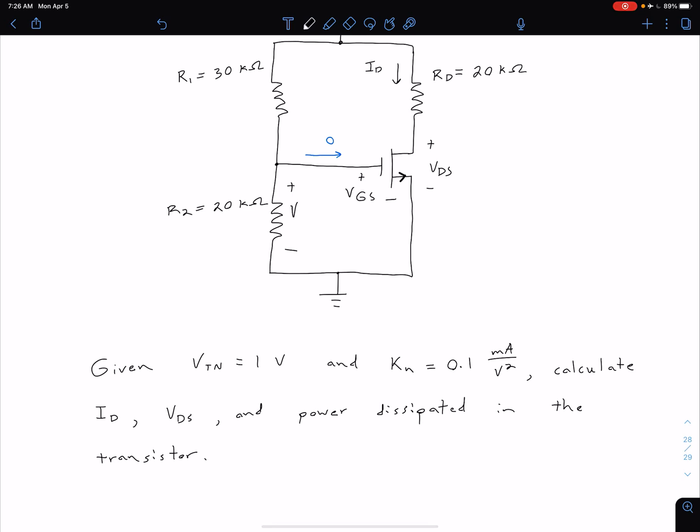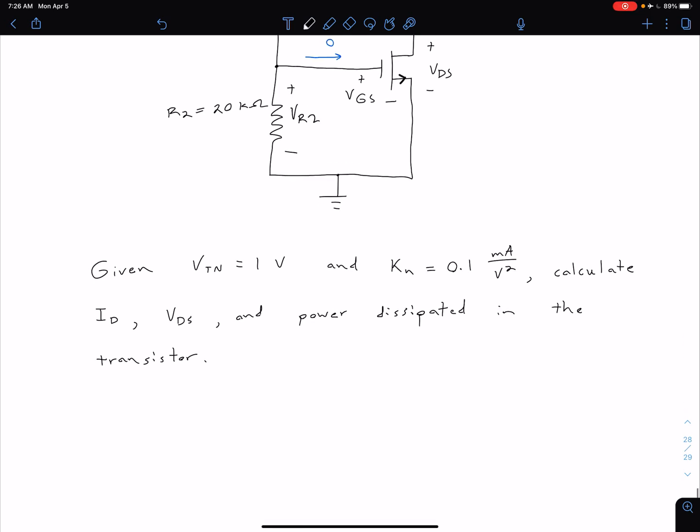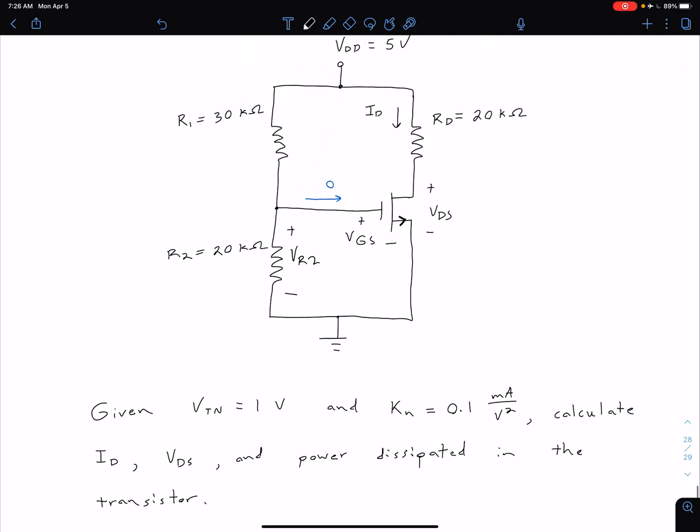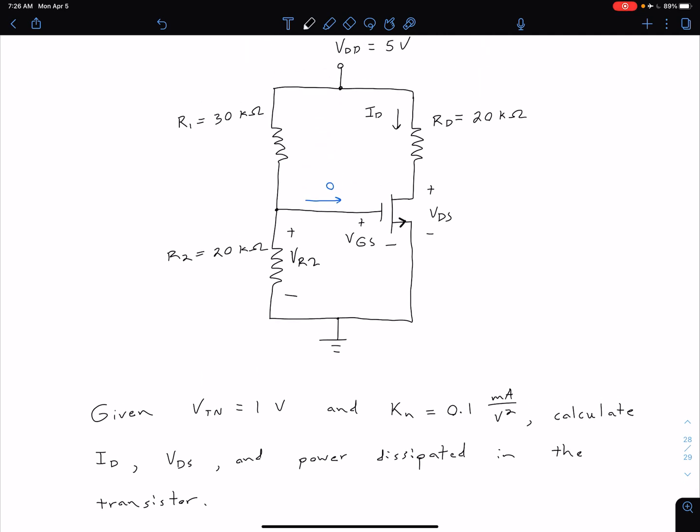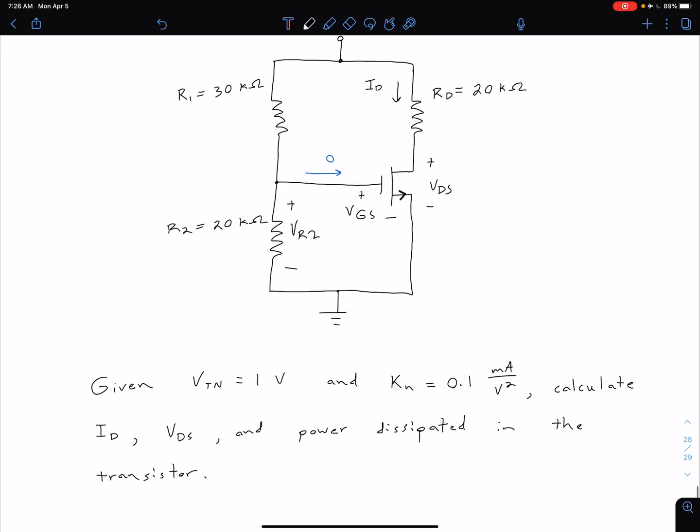In this particular configuration, we can note that VGS voltage is the same as the voltage across our resistor R2. So we can call this VR2. And we can note that in this case, our VGS is equal to VR2 because of the connection in the circuit. And we can solve for that just using simple voltage division on this part of the circuit, because we do have zero current going into that gate.